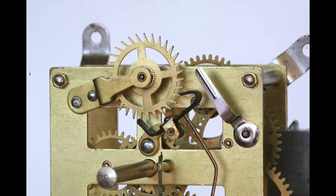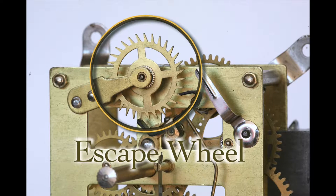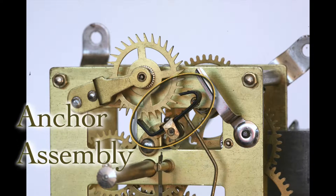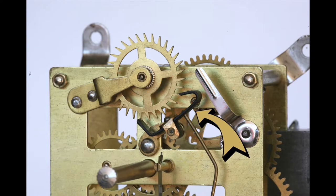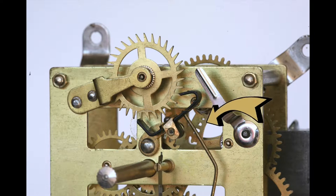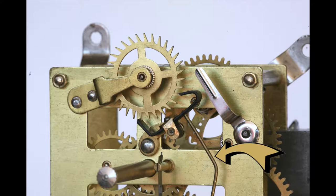The main spring stores a lot of power which is controlled by the escapement. The escapement is the escape wheel, a special wheel with pointed teeth, and an anchor assembly made up of the anchor, saddle, pallets, and crutch.